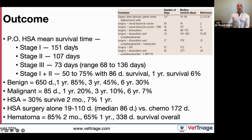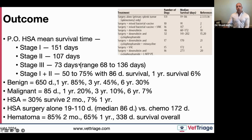With hemangiosarcoma, surgery alone gives a median of 86 days, but chemotherapy can roughly double that. Whether chemotherapy is worth it depends on the owner's finances and emotional outlook — it warrants an oncology consultation. Splenic hematoma dogs do much better: 85 percent survive two months, 65 percent survive one year, with overall median survival of 338 days. These dogs are likely dying from other geriatric diseases rather than the hematoma itself.